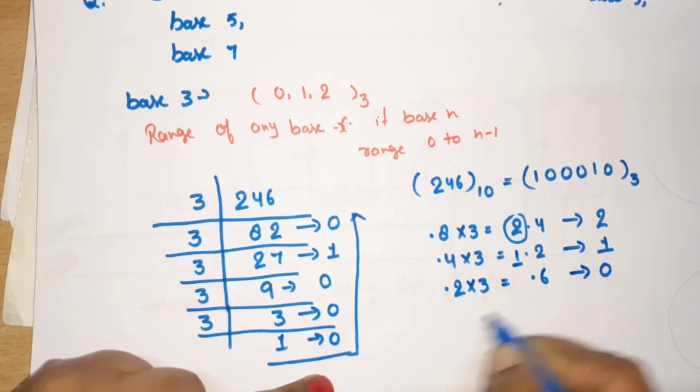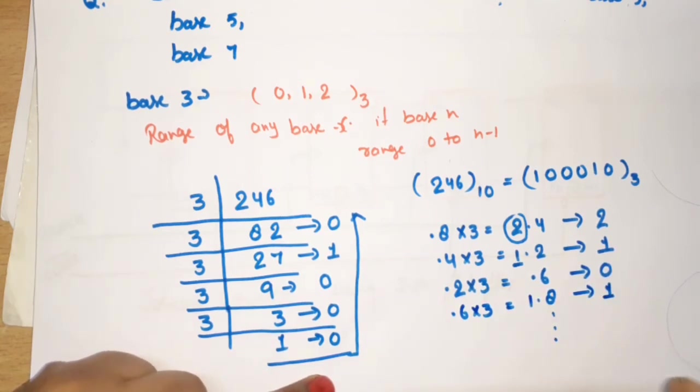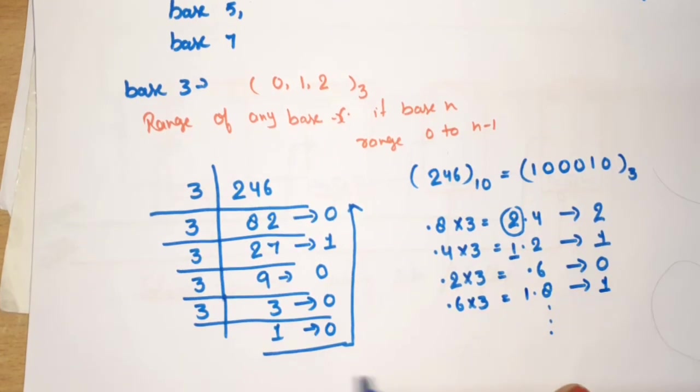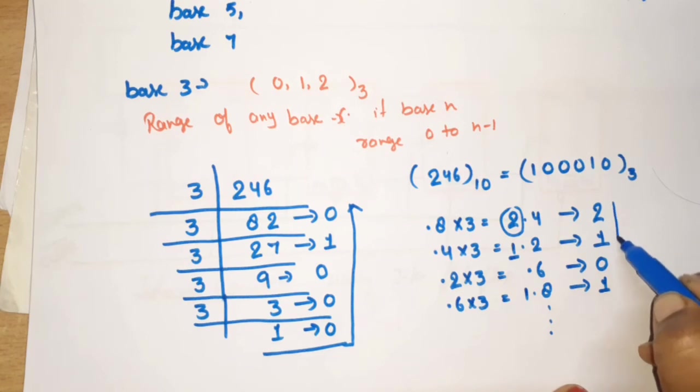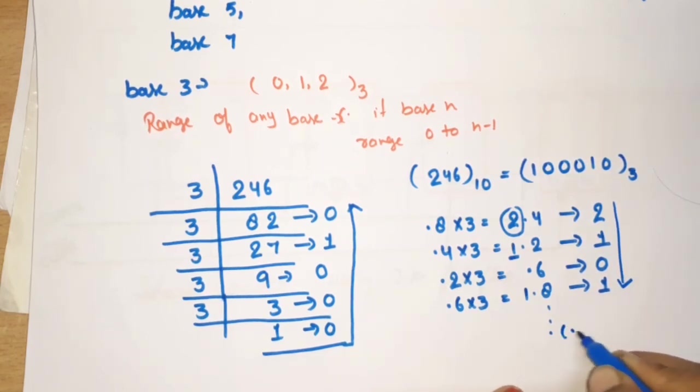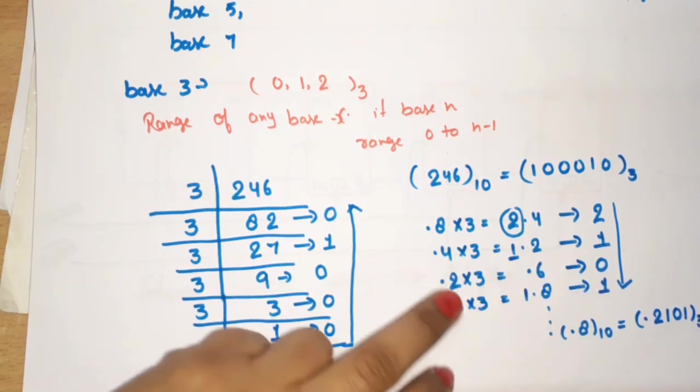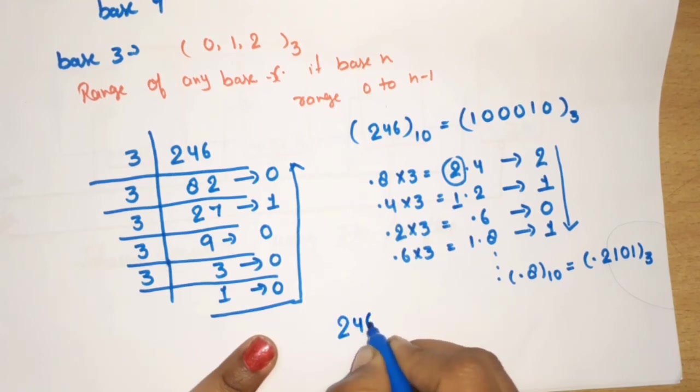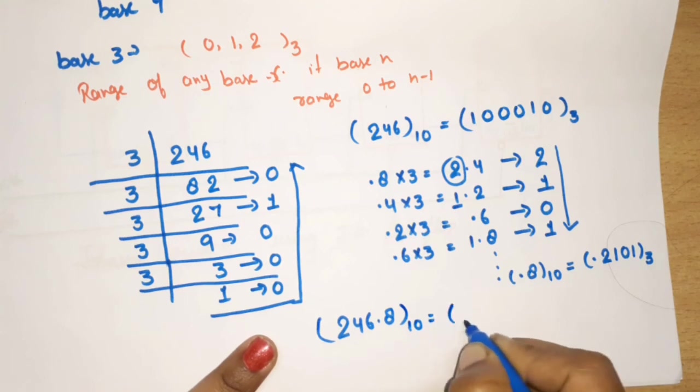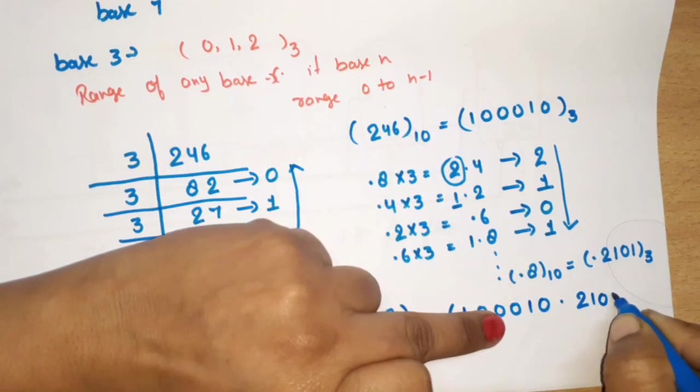Now 0.6 into 3 is equal to 1.8. Here our integer part is 1. This is also possible to go to 4 places, but I will take 4 places. I will remind that when you have integer number, you would go down to the upward direction. When you have fraction number, you would go up to the downward direction. At means 0.8 which was at base 10 in base 3 will be 0.2101 basis 3.